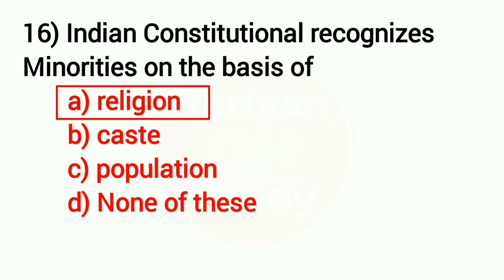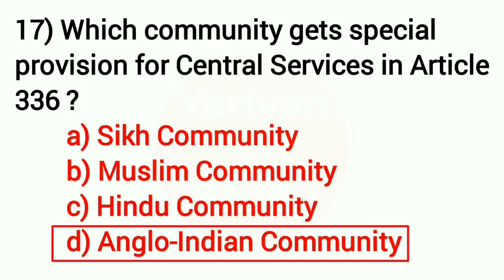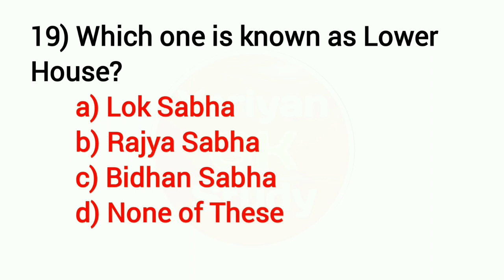Question number 17: Which community gets special provision for central services in Article 336? Answer: the Anglo-Indian community. Question number 18: The Indian Constitution was adopted in which year? Answer: Option B — 1949.